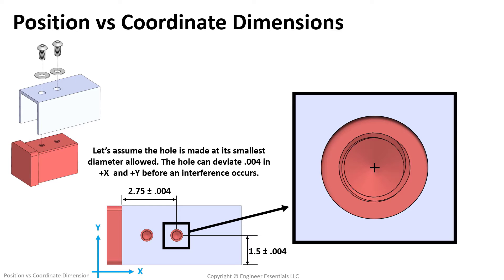Well, if we visualize this simple example and allow the hole in the aluminum channel to drift in X until all the clearance is utilized, we see that the maximum deviation we can have before there's an interference with the fastener is four thousandths of an inch.